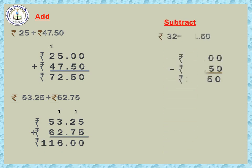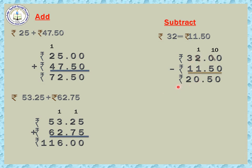Next, subtract. First question: rupees 32 minus rupees 11 and 50 Paise. Arrange properly. 0 minus 0 is 0. 0 minus 5 is not possible, so cut the 0 and go to the next digit 2 — cut it, 2 becomes 1. Borrow from the 1 so that 0 becomes 10. Now 10 minus 5 is 5 — put the point. 1 minus 1 is 0, 3 minus 1 is 2. The answer is rupees 20 and 50 Paise.